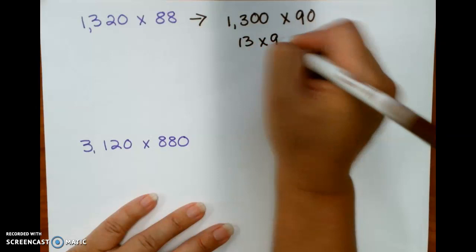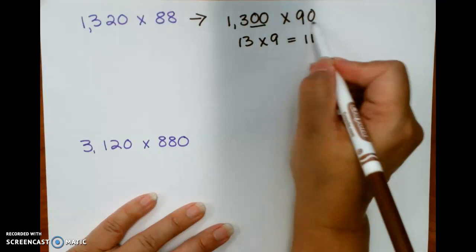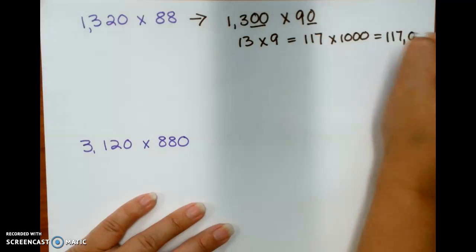Which if I multiply 13 times 9, I get 117, and then I would multiply times 1,000, which I get from 100 times 10. So I get 117,000, which is one way to do it.